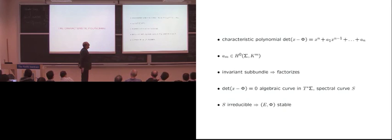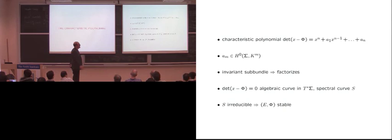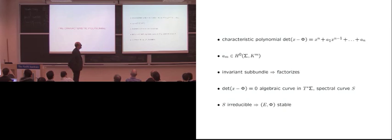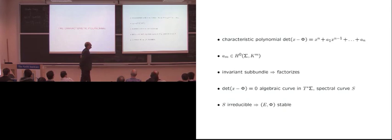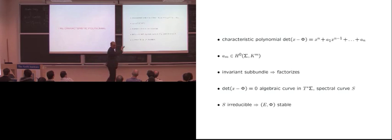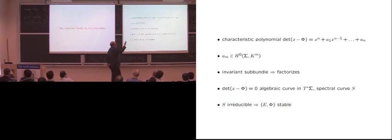The characteristic polynomial came into the picture through the existence proof. Phi is an endomorphism with values in the canonical bundle, so the coefficients of the characteristic polynomial are holomorphic sections of various powers of the canonical bundle. Looking at the characteristic polynomial is very useful in finding stable bundles: if you have a phi-invariant sub-bundle, the characteristic polynomial of the big bundle is divisible by that of the sub-bundle. So if the algebraic curve defined by vanishing of the characteristic polynomial is irreducible, you automatically have a stable bundle.